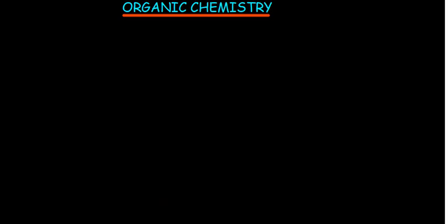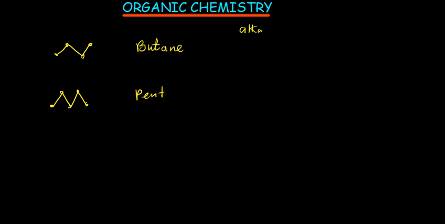For an alkane, count the carbons and add the suffix -ane. A four-carbon alkane: four carbons → but- + -ane = butane. A five-carbon alkane: pent- + -ane = pentane.